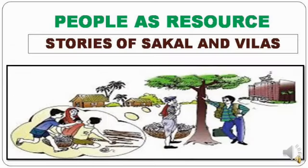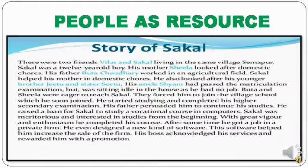There were two friends, Villas and Sakal, living in the same village, Simapur. Sakal was a 12-year-old boy. His mother Sheila looked after domestic chores, and his father Buta Chowdhury worked in an agricultural field. Sakal helped his mother and looked after his younger siblings. His uncle Sham had passed the matriculation examination but was sitting idle with no job. Buta and Sheila were eager to educate Sakal and forced him to join the village school.